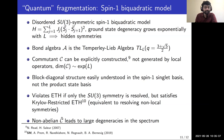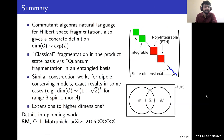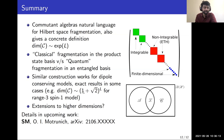In this case the commutant is non-abelian, which leads to large degeneracies in the spectrum. In summary, commutant algebras provide the natural language for Hilbert space fragmentation. They give a concrete definition, allow us to distinguish classical from quantum versions of fragmentation, and a similar construction works for dipole-conserving models. Both the bond algebra and commutant algebra are more complicated in that case, but exact results can be obtained in some cases. More details will be in upcoming work.